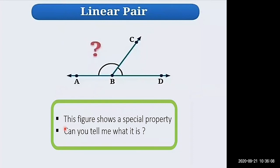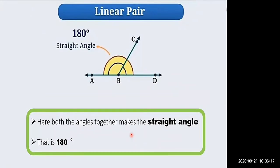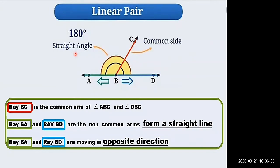Look at this figure — it shows a special property. Both angles together make a straight angle, that is 180 degrees. Ray BC is the common arm of angle ABC and angle DBC.